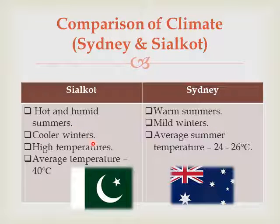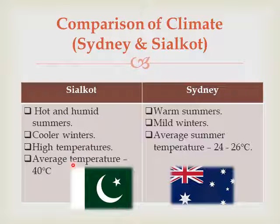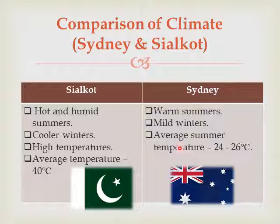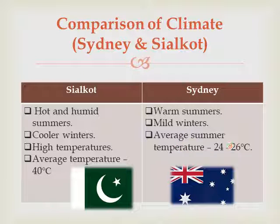In Sialkot, the average summer temperature goes up to 40 degrees Celsius. On the other hand, Sydney has warm summers and mild winters, with summer temperatures between 24 to 26 degrees Celsius.